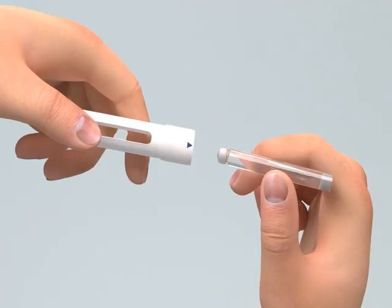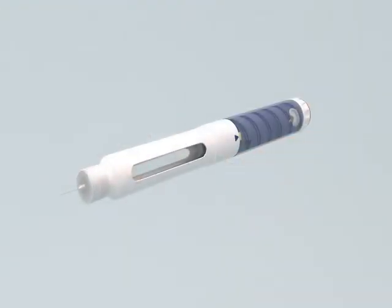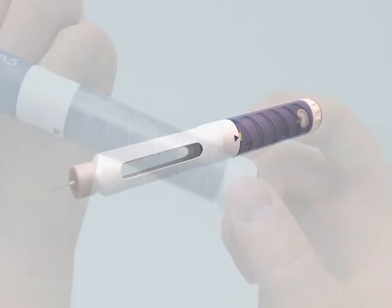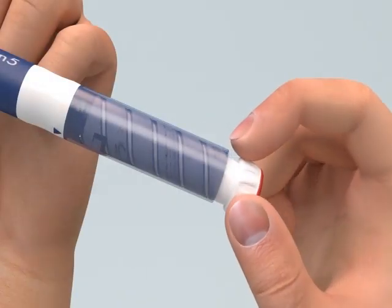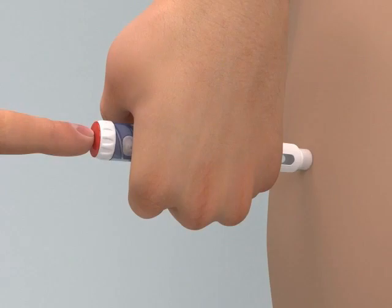It is important to make sure that the pen needle unit is not attached to the pen when replacing your cartridge. Once the pen has been primed for injection, you can set the dose to the number that you noted when the injection stopped and finish your injection.